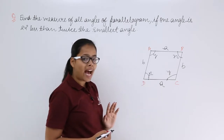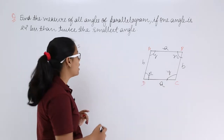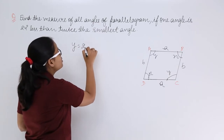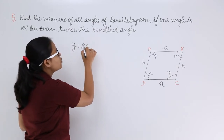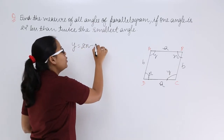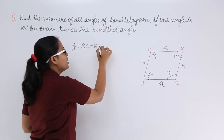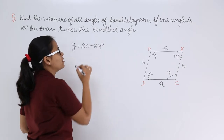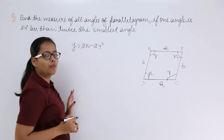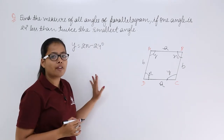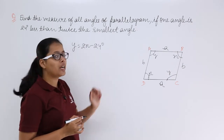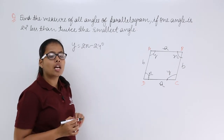It has been given that y is twice the smallest angle minus 24 degrees. So we have the value of y in terms of x: y = 2x − 24 degrees.